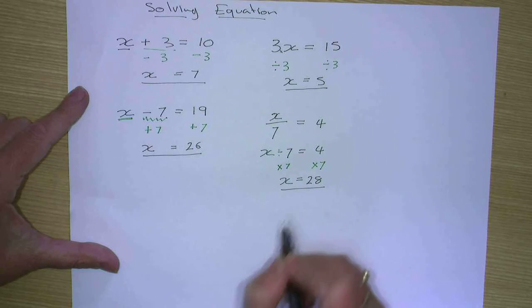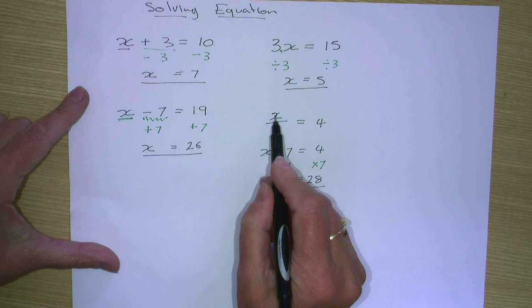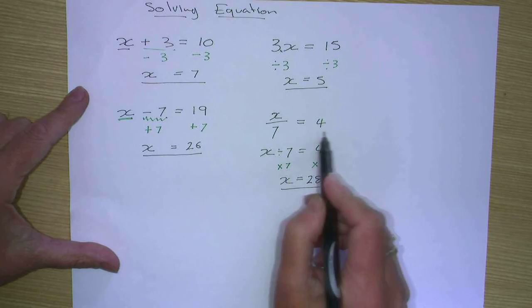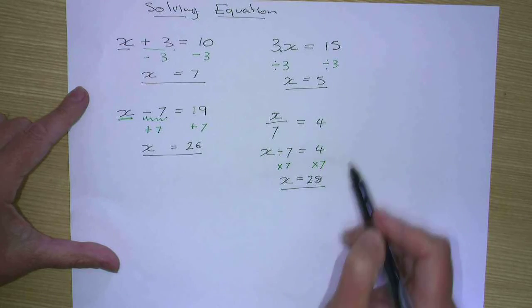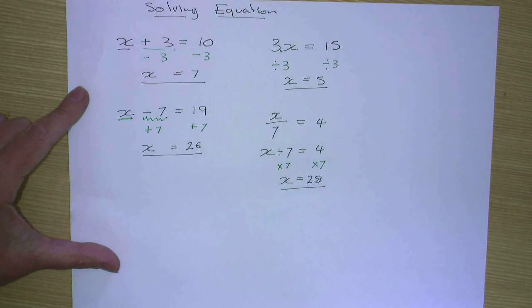And that's our answer. So if we put the 28 back into this equation, 28 divided by 7 is 4. Or 28 divided by 7 is still 4. So that's simple one-step equations. The next video will be two-step equations.